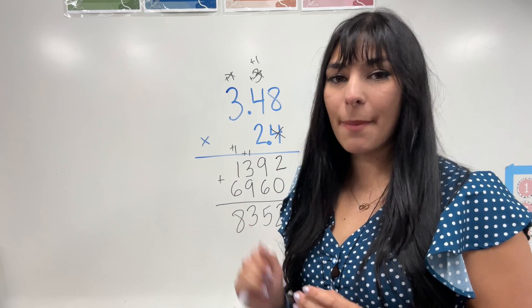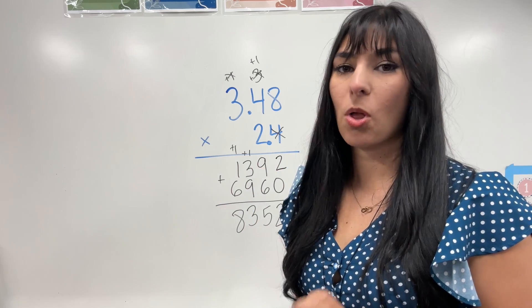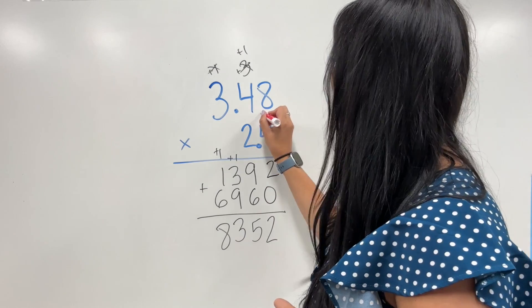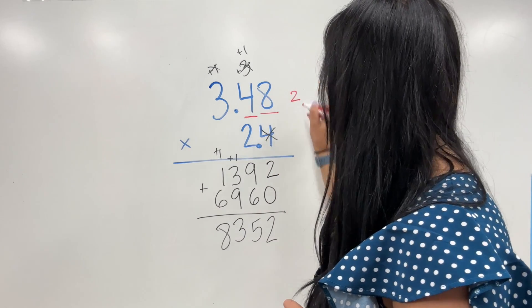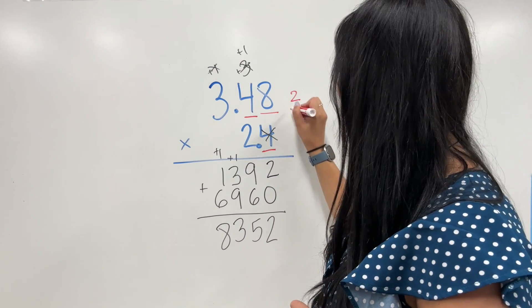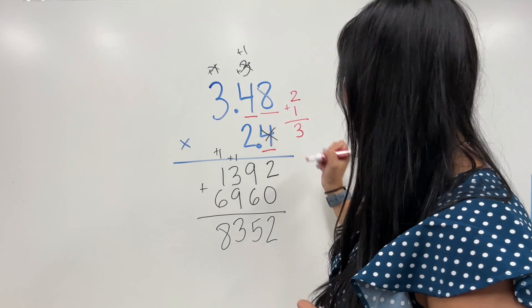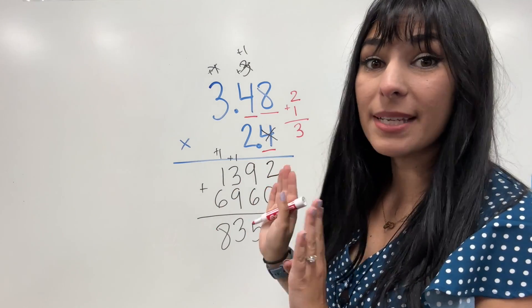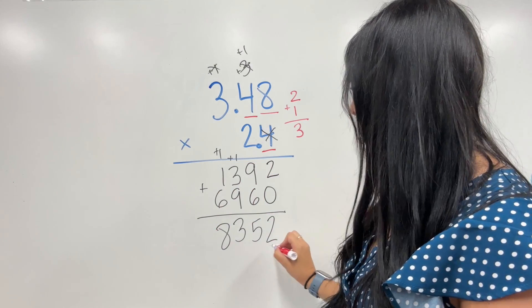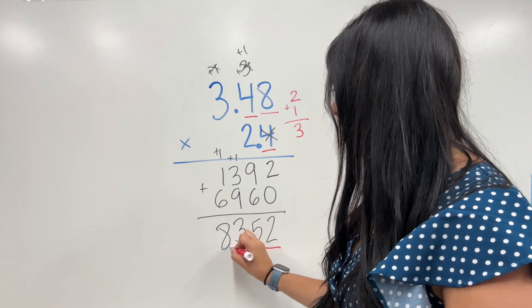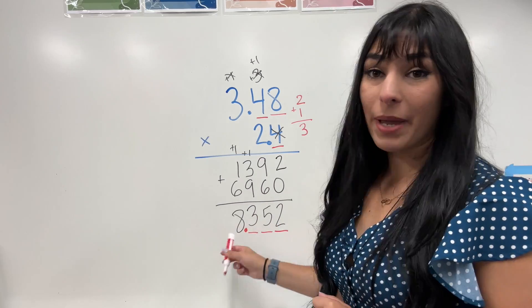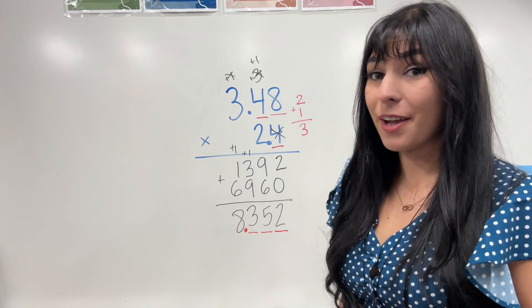Now here's where the decimals come back. I'm going to count how many spaces to the decimal in each factor. This one has 2, this one has 1. Add those together, that means I have 3. I need to move over 3 spaces with my answer to place the decimal. So I have 1, 2, 3. That's where my decimal goes. My answer is 8.352.